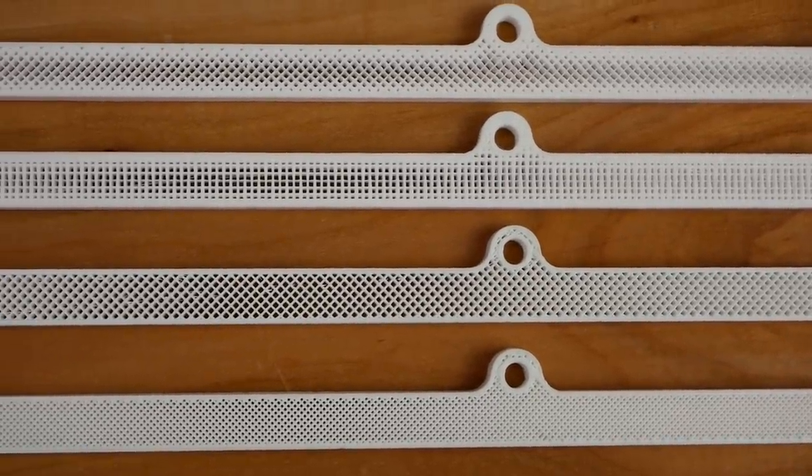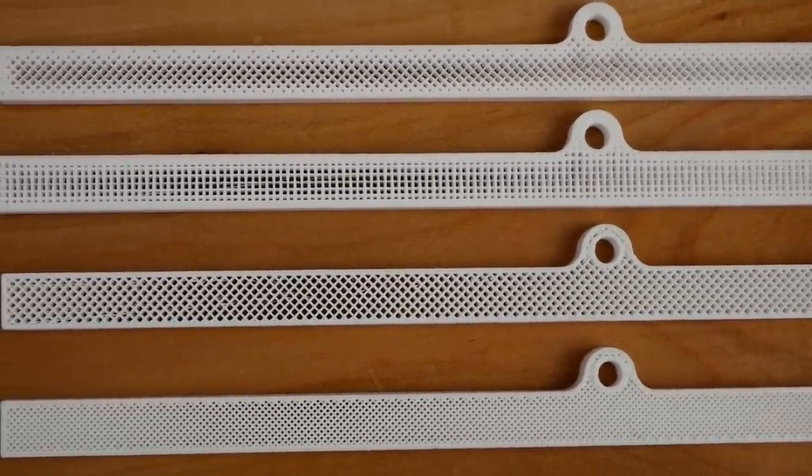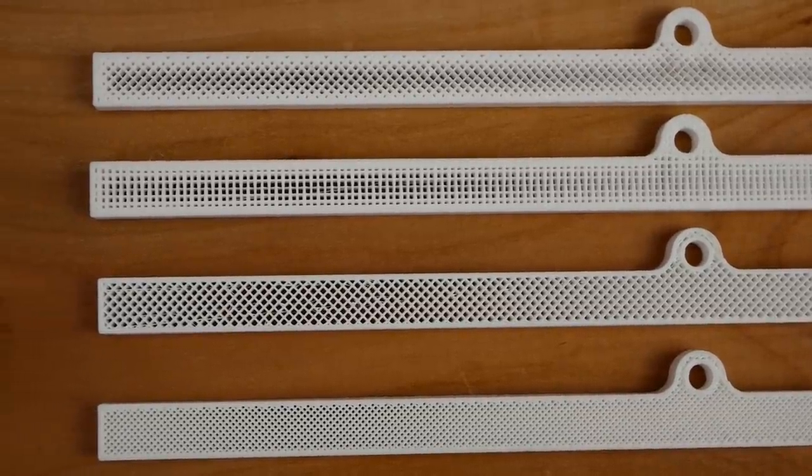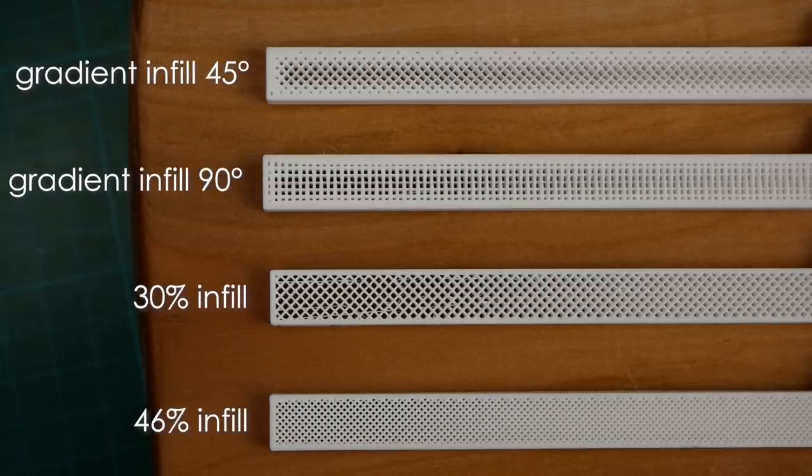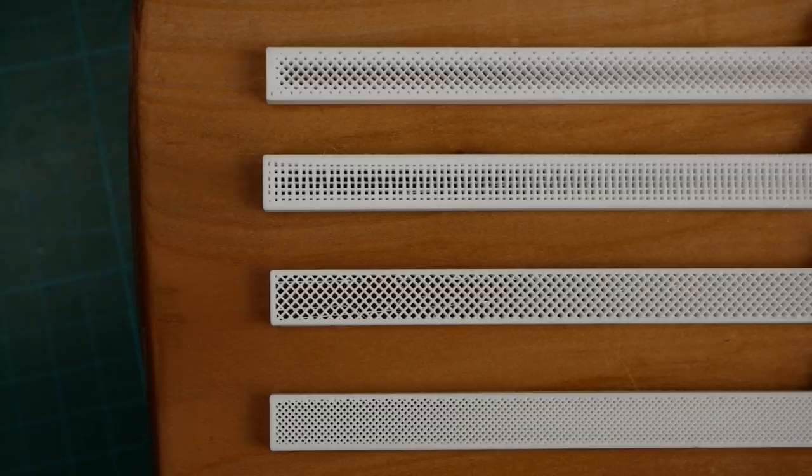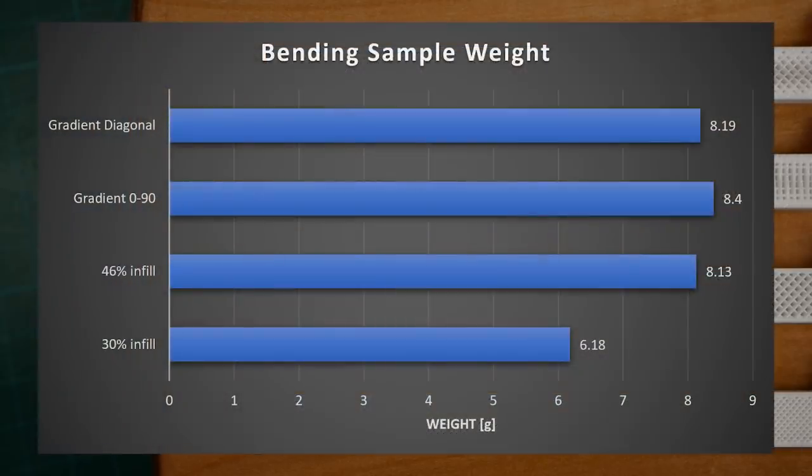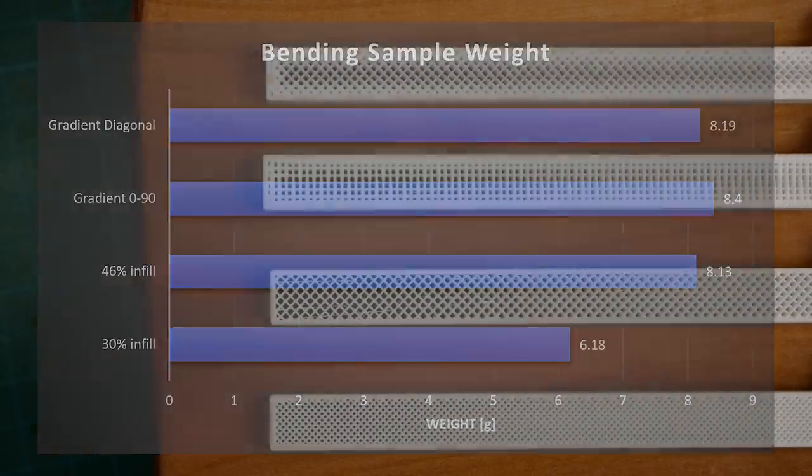For the bending bar, I started with a part that had 30% rectilinear infill and post-processed it with a flow range of 25-300% and 4mm gradient thickness. I also tested 45 degrees and 90 degrees infill orientation. The parts nicely show how the infill is denser on the outside and sparser on the inside. The gradient infill parts weighed 30% more in the end. I also printed out a 30% infill part without post-processing and a 46% part that had the same weight as the gradient infill parts.